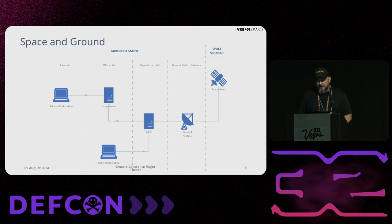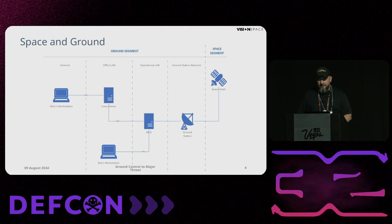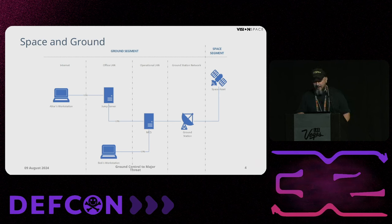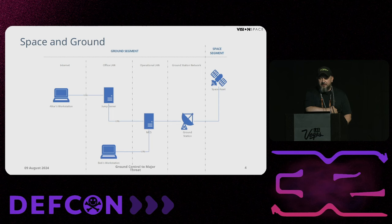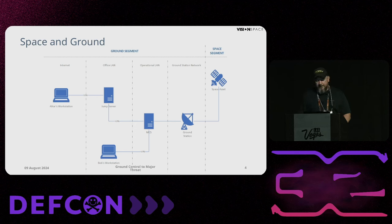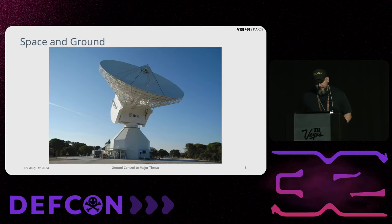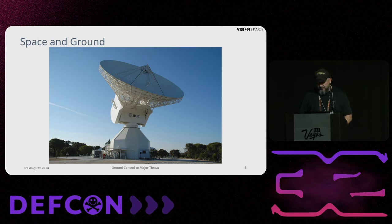This is a high-level representation of a space mission divided into space segment and ground segment. On the space segment you have a space asset — a spacecraft. Then you have a ground station that communicates with the spacecraft, a mission control system, and users who work internally on dedicated workstations or connect remotely through a VPN or jump host. It's going to be much easier to hack the ground segment than to build equipment to communicate directly with satellites.